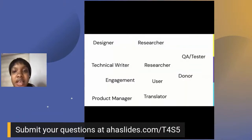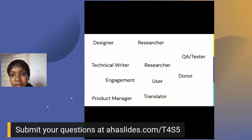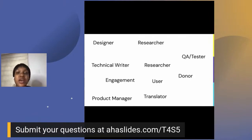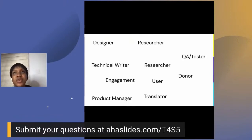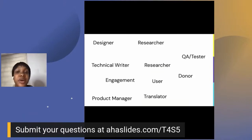So here are the various ways people can contribute to open source: you can be a designer, a researcher, a technical writer, you can help through engagements, you can be a product manager, a translator, a donor, a QA tester, or most importantly, a user. You don't necessarily need to be a developer who writes code. Open source is large — it's like a huge umbrella that covers everybody. Pick the role you can effectively do and be part of it.